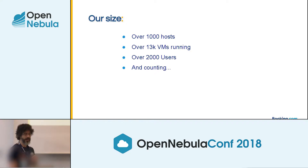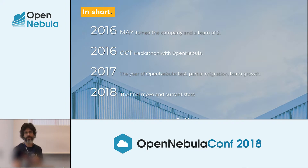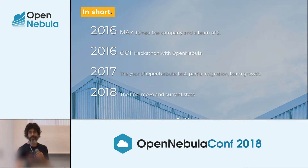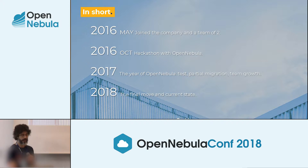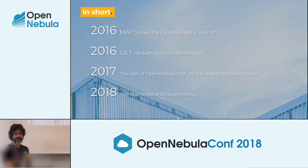We are kind of big. We have over 1,000 hosts, over 13 KVMs running with 2,000 users who are developers — and we're still counting, those numbers are already old. I joined the company in 2016 on a team of 2, just Mariano working on KVMs. In 2018 on October, we started to play with OpenNebula on a Hackathon Day, made a proof of concept, and confirmed we could make OpenNebula work in our infrastructure. The project really took off and we slowly migrated to it. This year was the final move — we dropped all KVM implementation and are now fully based on OpenNebula.